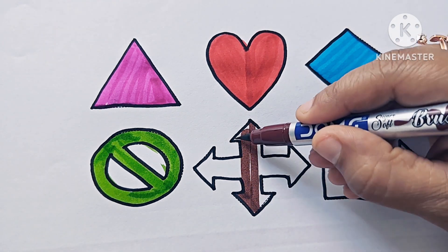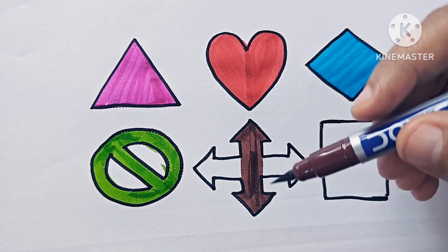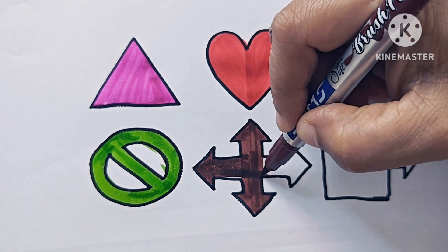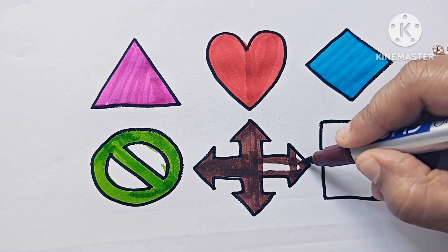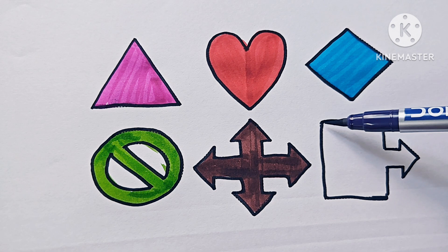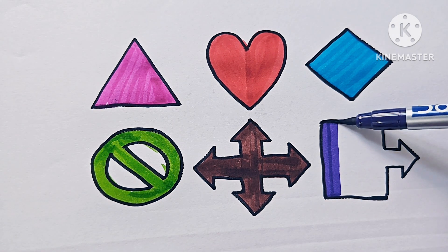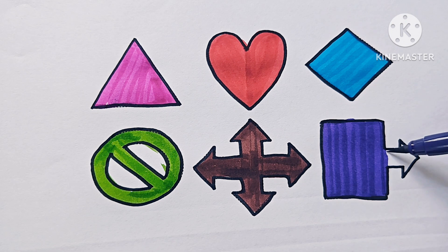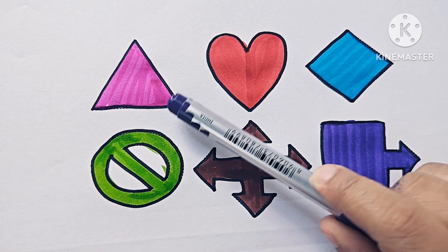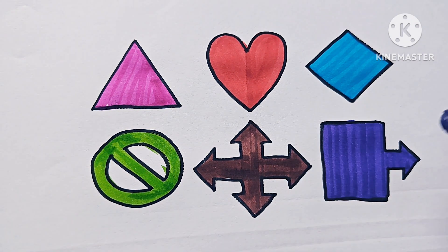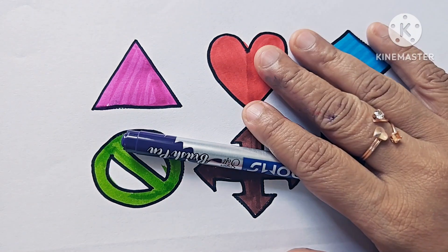This is the quad arrow symbol, and the color is brown. This is the right arrow callout symbol, and the color is purple. Triangle, heart, rhombus, not allowed symbol, quad arrow symbol, right arrow callout symbol. Thanks for watching this video.